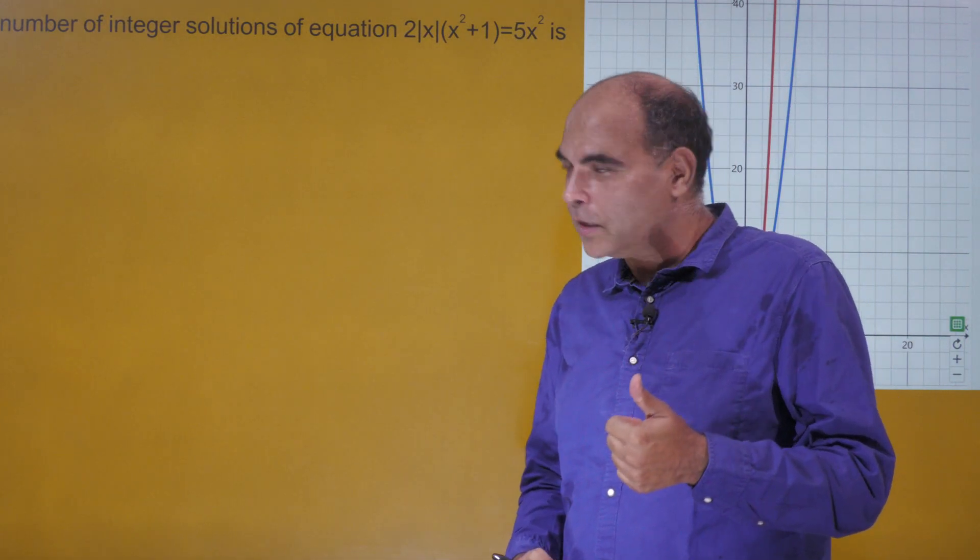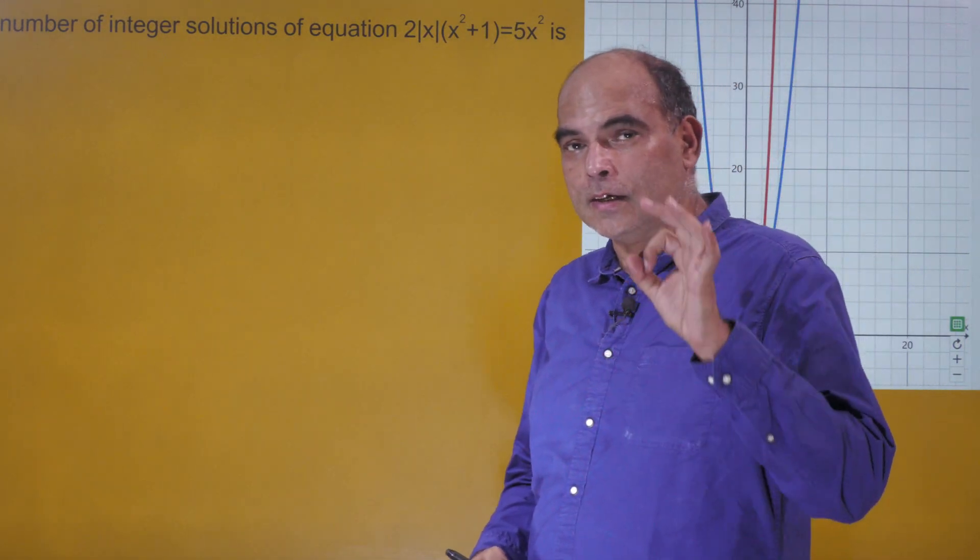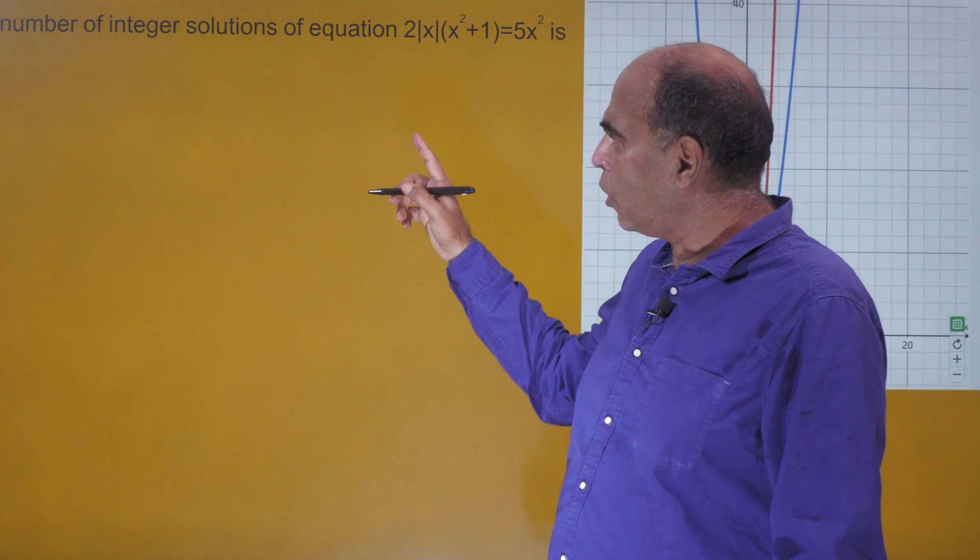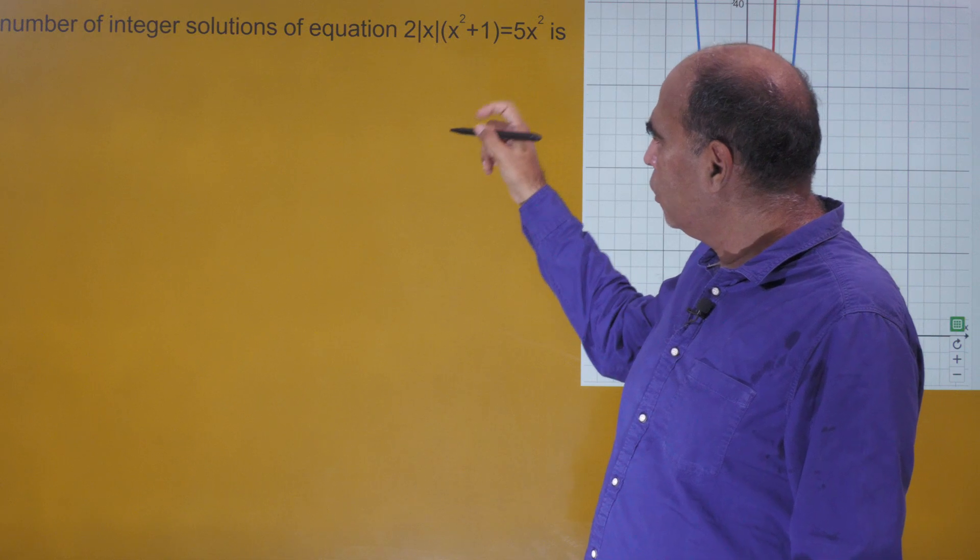Hey guys, welcome back to the 60 Second Series - CAT questions solved in 60 seconds, three reactions all it takes for CAT questions. This is from CAT 2023 slot 1: the number of integer solutions of the equation 2|x|(x² + 1) = 5x².